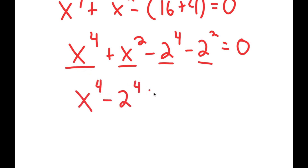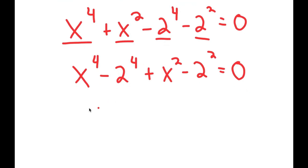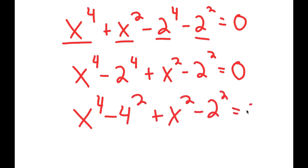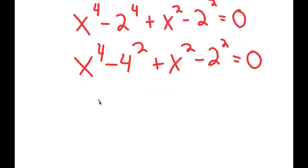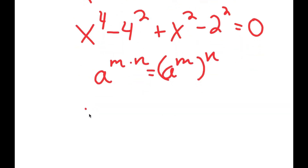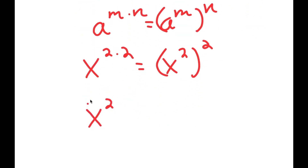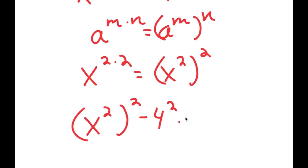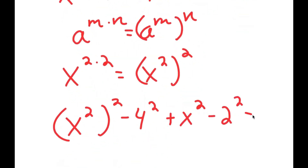Now I can put the powers of 4 together and the powers of 2 together. So I get x to the power of 4 minus 2 to the power of 4, plus x squared minus 2 squared. Now, using the rule that a to the power of m times n equals a to the power of m to the power of n, x to the power of 4 is the same as x squared to the power of 2. So I get x squared to the power of 2 minus 4 to the power of 2, plus x squared minus 2 squared, equals 0.